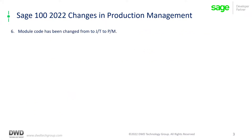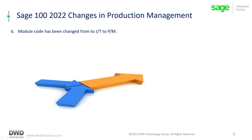For those of you who get into behind-the-scenes and look at some of the tables when writing reports, you will notice that all of the module code has been changed from JT to PM. JT was what Sage had used prior to 2022, and now they have changed it to PM for production management.